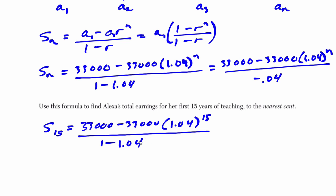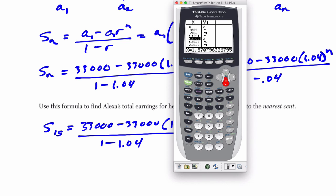On the calculator, let's take a look at that. It's just about the numbers. 33,000 minus 33,000 times 1.04 to the 15th. I'm going to hit enter and then divide that by parenthesis 1 minus—make sure you have those parenthesis if you're entering the whole subtraction there, you don't want to mess with the order of operations—1.04. You want to divide by the whole difference, not just 1 and then subtract 1.04.